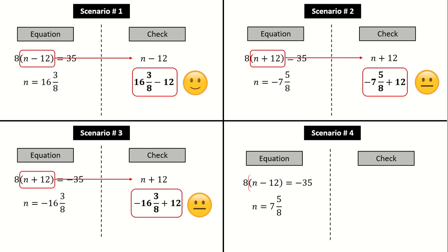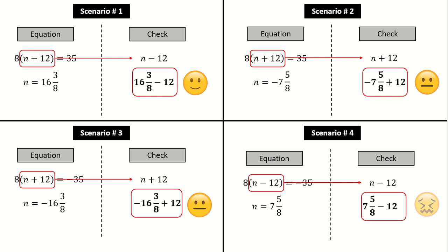And then we get scenario number four: we do our check and we have a positive mixed number, but we're subtracting a larger whole number, taking us from the positive into the negative domain. This one is the hardest.